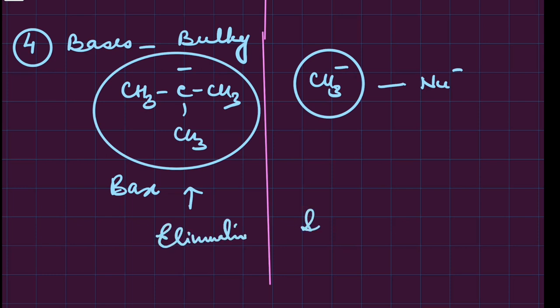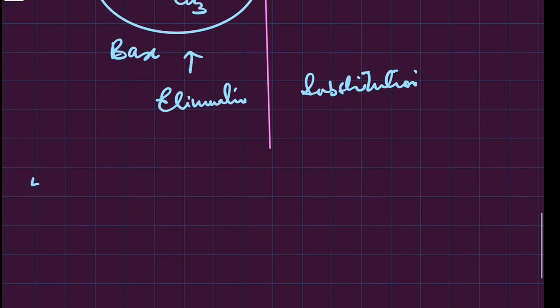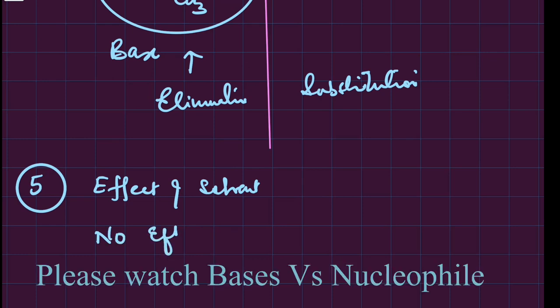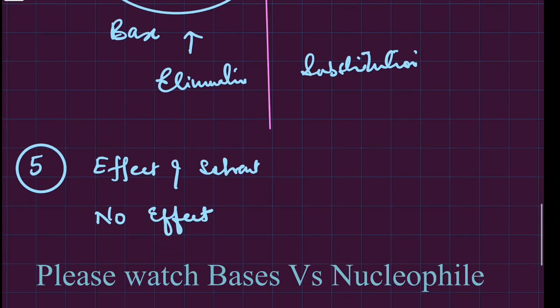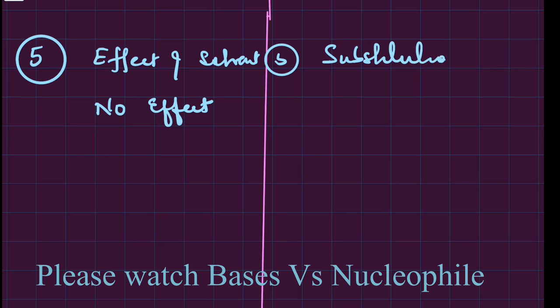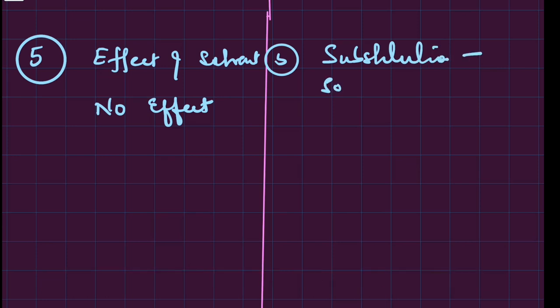Effect of solvent: elimination has no effect of solvent, bases do not get affected by solvent. Substitution gets affected by solvent - we have polar protic and aprotic solvents, so both reactions will be different.